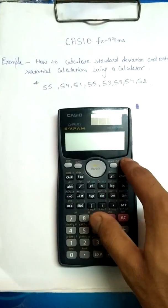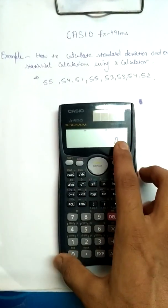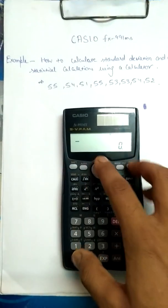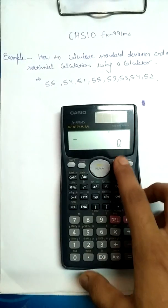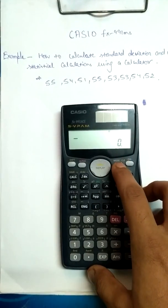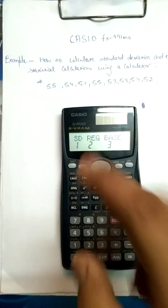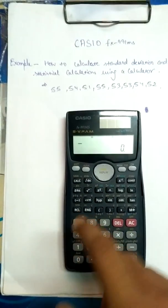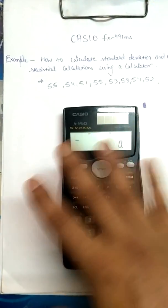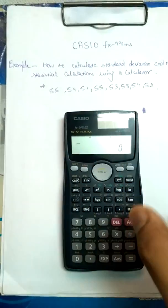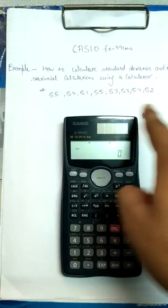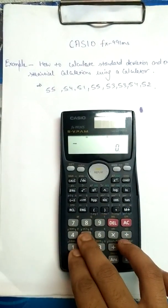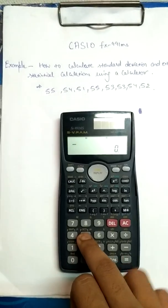So let's switch on the calculator first. To enter standard deviation mode, I have to press the MODE button two times. For standard deviation I'll press 1, so now I'm in the standard deviation mode.